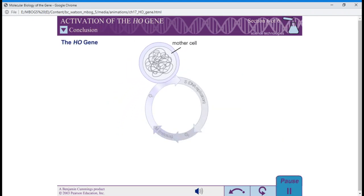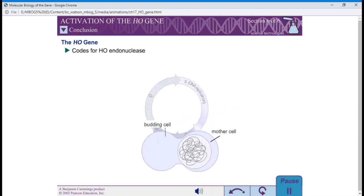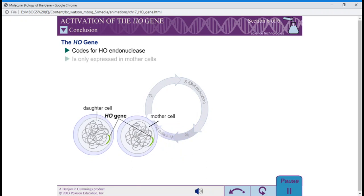The HO gene codes for a specialized DNA cleaving enzyme called HO endonuclease. The HO gene is expressed only in mother cells and only at a certain point in the cell cycle. Two activators work together synergistically to accomplish this control, SWIFI-5 and SBF.